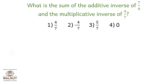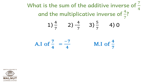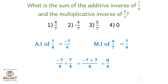What is the sum of the Additive Inverse of 7 upon 4 and the Multiplicative Inverse of 4 upon 7? The Additive Inverse of 7 upon 4 is minus 7 upon 4. The Multiplicative Inverse of 4 upon 7 is 7 upon 4. Minus 7 upon 4 plus 7 upon 4 equals 0. So the correct answer is option number 4: 0. And that brings us to the end of Additive and Multiplicative Inverse.